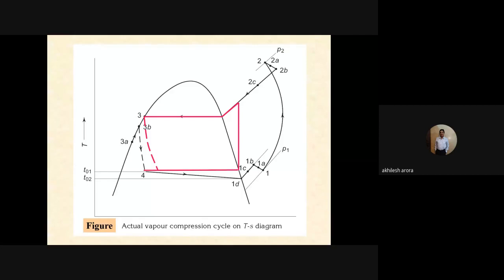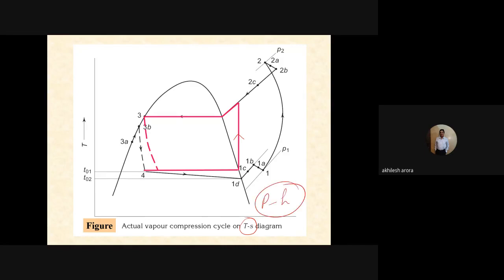The red line shows the simple saturated vapor compression cycle, while the black lines show the actual vapor compression cycle on a TS diagram. Until now we have been studying the PH diagram. The deviations will be given on a PH diagram rather than a TS diagram. If you want to see how these deviations look on a TS diagram, this is that diagram — it is quite complicated.